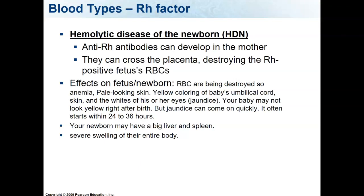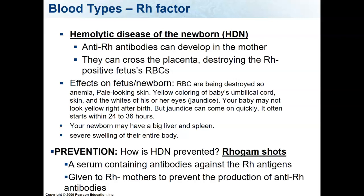Effects on the fetus with hemolytic disease of the newborn: the red blood cells are being destroyed, so the fetus will have anemia and pale skin. It will have yellow coloring in the umbilical cord, the whites of the eyes, and on the skin — this is called jaundice. It may also have an enlarged liver and spleen and severe swelling. Prevention involves RhoGAM shots given to RH negative mothers, which suppresses the mom's immune system so it won't make RH antibodies and won't attack the baby's blood.